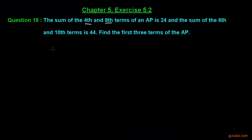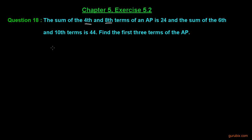This is question number 18 of exercise 5.2 of chapter 5. The question says: the sum of the 4th and 8th term of an AP is 24, and the sum of the 6th and 10th term is 44. Find the first 3 terms of the AP. Let us see how to solve this question.